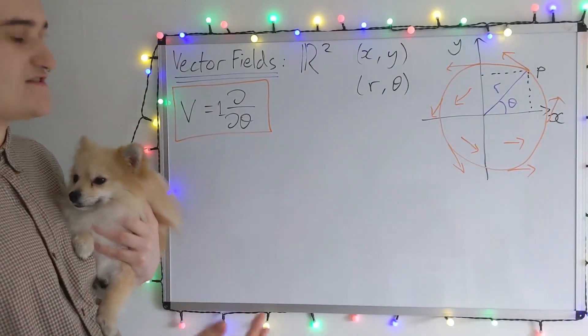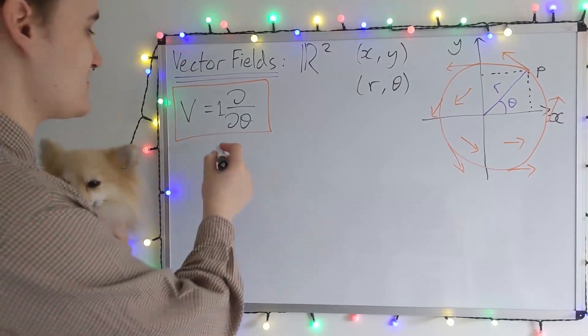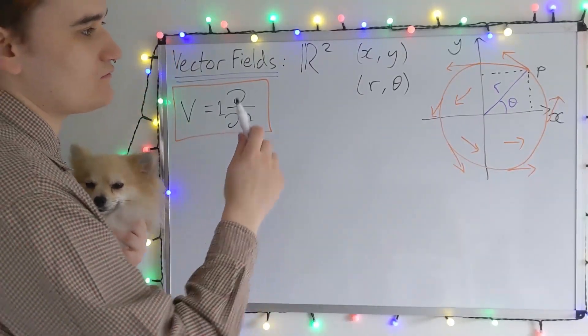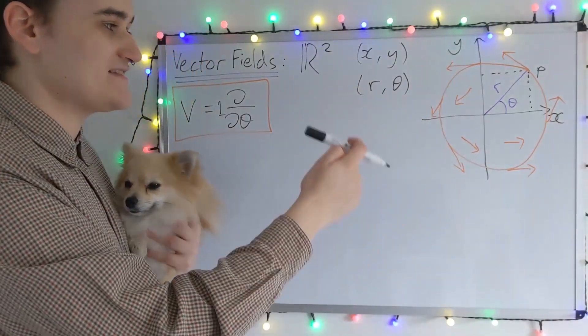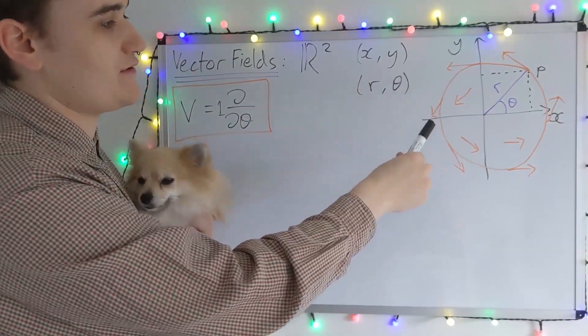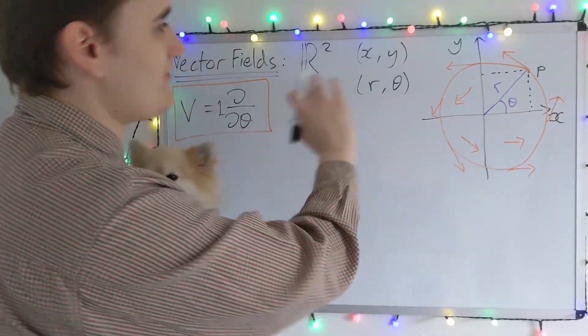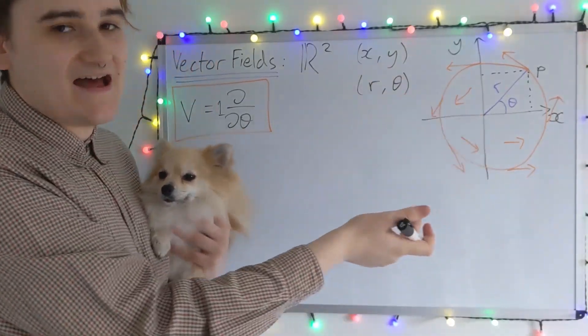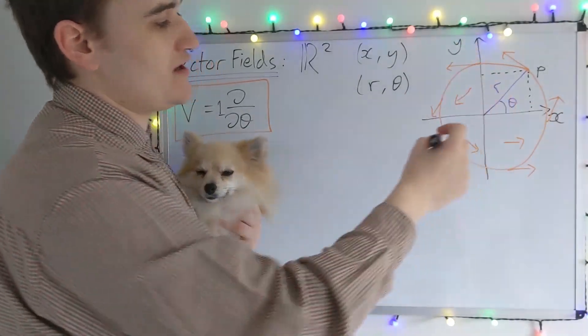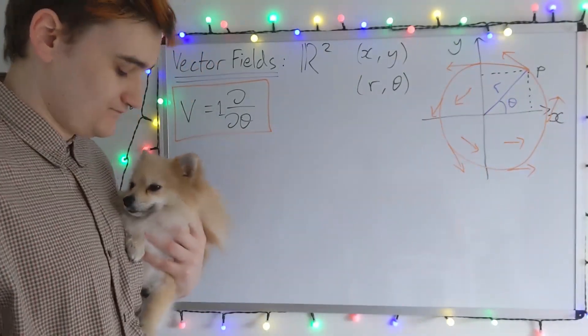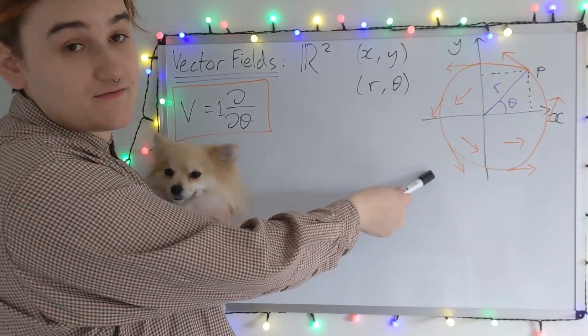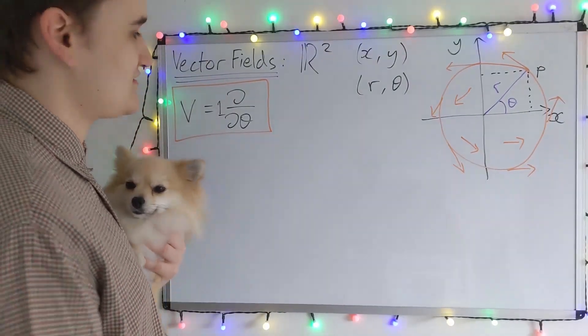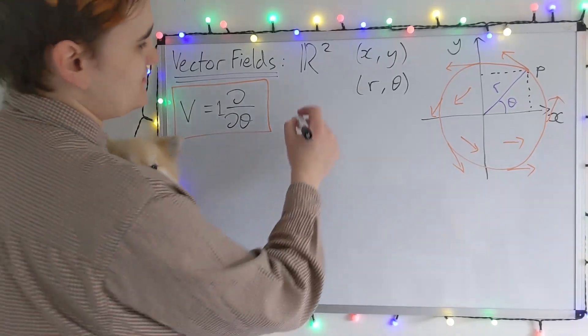Okay, so the expression for the vector field in the theta chart is very simple. It's just the d by dθ basis vector. Now, what I've drawn here is actually the image of this vector field on the manifold itself. Because remember, the manifold is R². I've simply drawn the manifold and drawn one of the charts, the x and y chart, on the same figure. So our d by dθ vector field looks like this on the manifold. But now I want to show you how it looks in something slightly different.